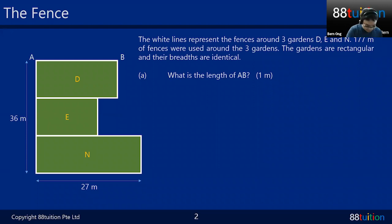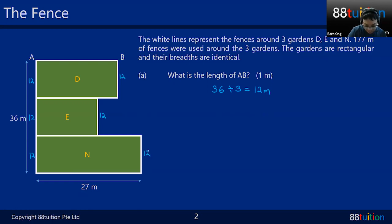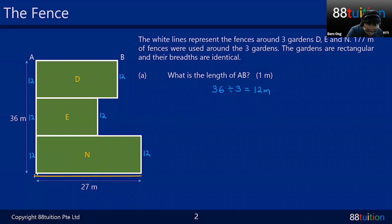For part A, find the length of AB. We know the breadth is 36 divided by 3, giving 12 meters each. So this part is 12, this part is 12, this part is 12. I'll update my drawing. I can also see this portion is 27, which means this other portion is also 27.